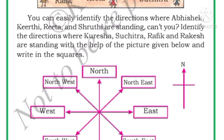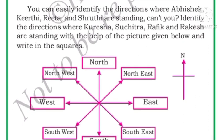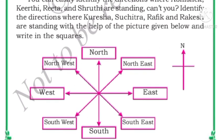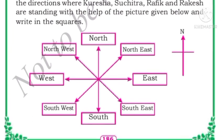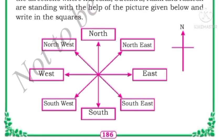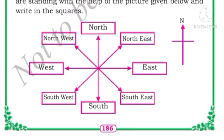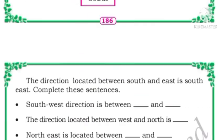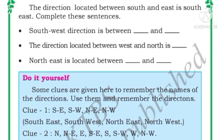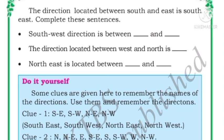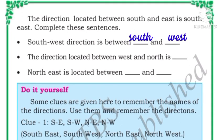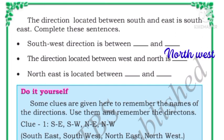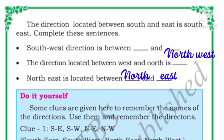The direction between North and East is called Northeast. The direction between South and East is called Southeast. The direction between West and South is called Southwest. The direction between North and West is called Northwest. Now fill in the blanks: the direction located between South and East is Southeast; between South and West is Southwest; between West and North is Northwest; and between North and East is Northeast.